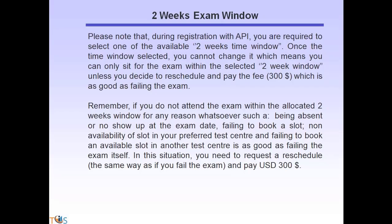During registration with API, you are required to select one of the available two-week time windows. Once selected, you cannot change it, meaning you can only sit for the exam within that two-week window. Unless you reschedule and pay the $300 fee — which is as good as failing the exam — if you do not attend for any reason such as absence, no-show, failing to book a slot, getting sick, or non-availability, it counts as failing.